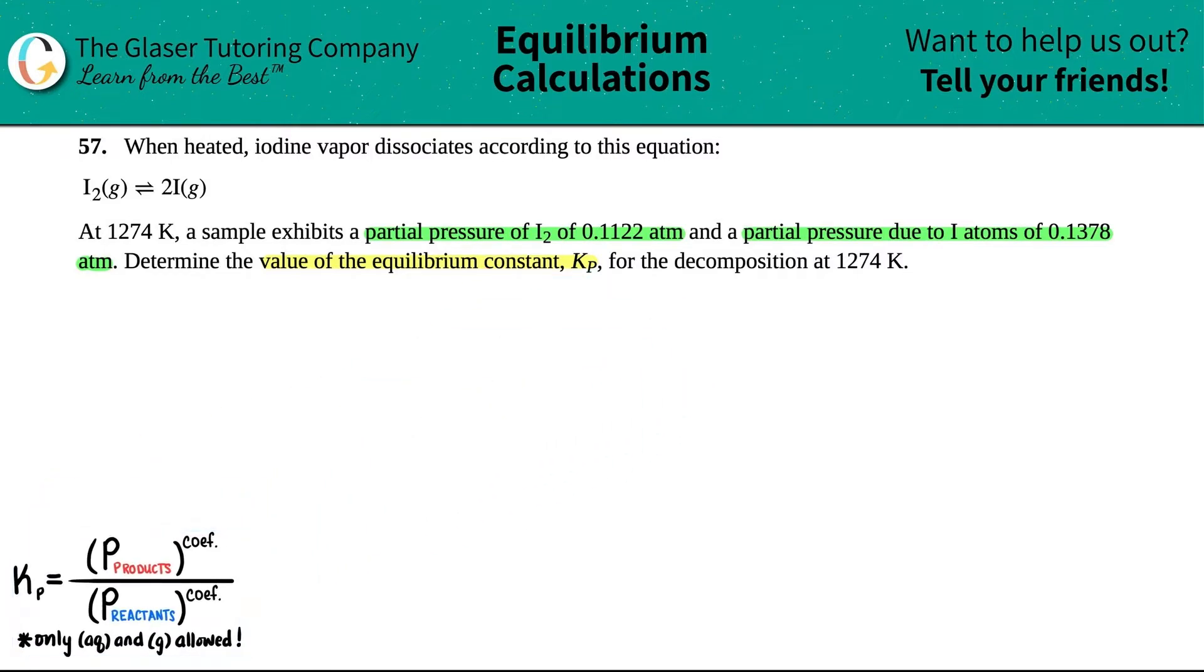It's just products divided by reactants and we raise each number to the coefficients. I'm just going to write this balanced equation a little bigger so we can work with it: I₂ gas comes to equilibrium with 2I gas.